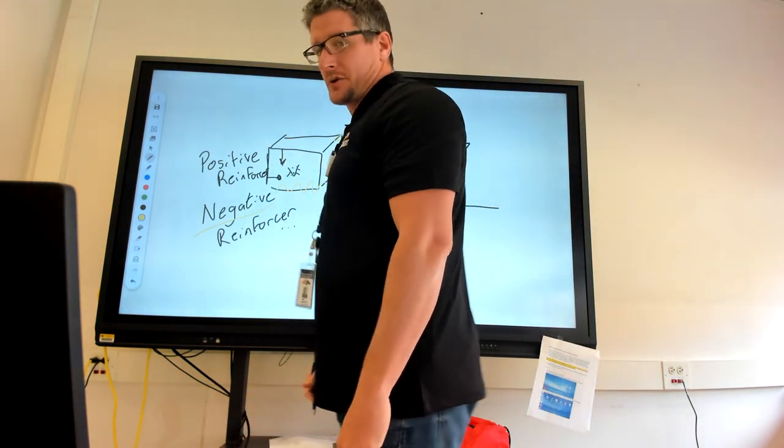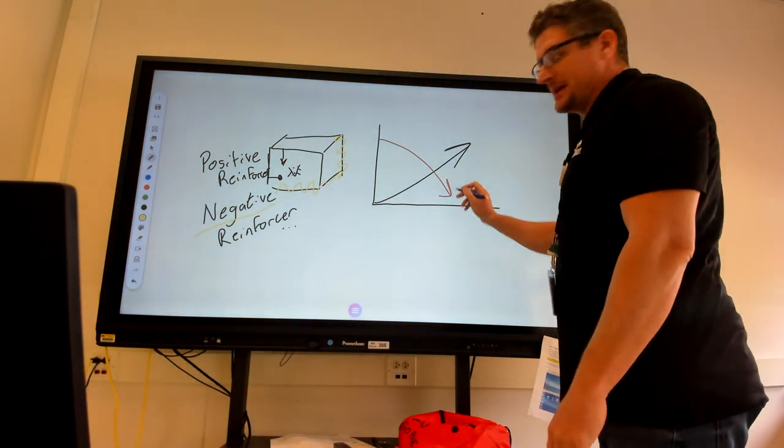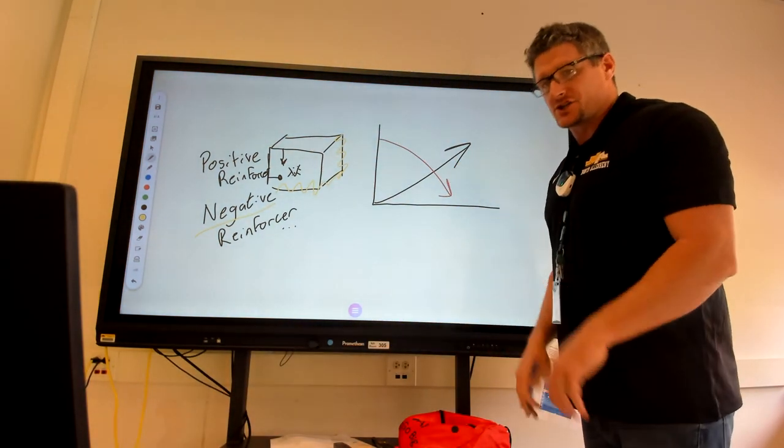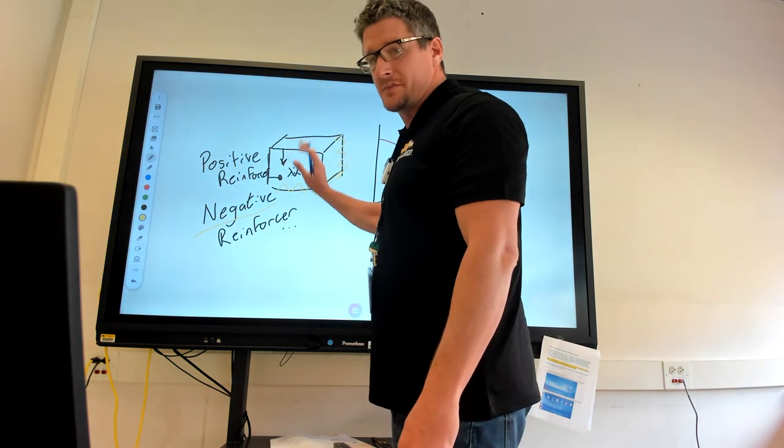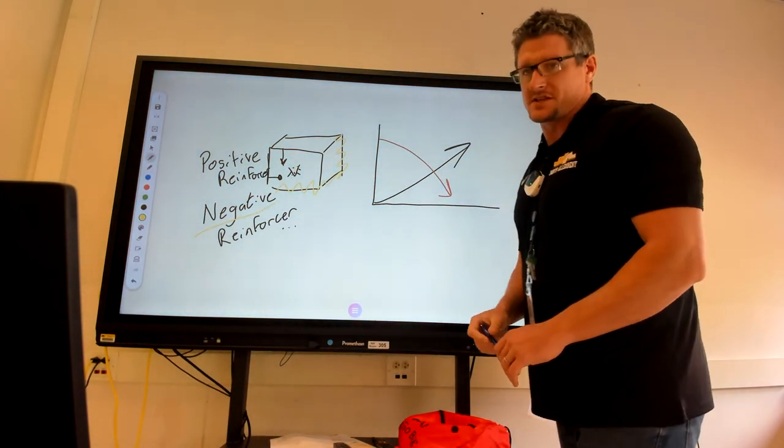Positive reinforcer, negative reinforcer. This right here would be a punishment. I draw a graph. I get shocked. Negative reinforcer, positive reinforcer, both increase behavior. Punishment attempts to decrease it.